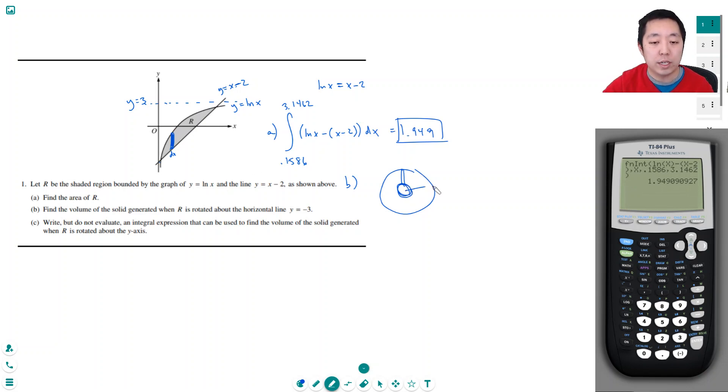The larger radius is the distance from 3, so it's whatever this y value is, it's 3 minus this y value. So my big R, the radius of the big disk, is 3 minus ln x. The inner radius, that's the distance from here to the lower function... Oh actually the outer radius is, sorry, the outer radius is all the way down to here, so that's 3 minus (x minus 2). And the inner radius is the distance from 3, so that's 3 minus ln of x.